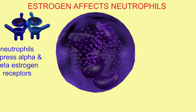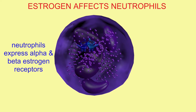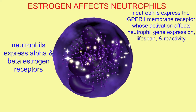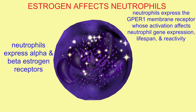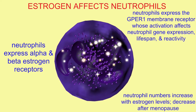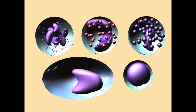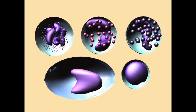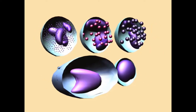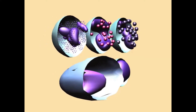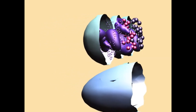Neutrophils not only express the alpha and beta estrogen receptors, but they also express the G-protein coupled receptor which reacts to estrogen. This G-protein coupled receptor affects neutrophil gene expression, lifespan, and reactivity.